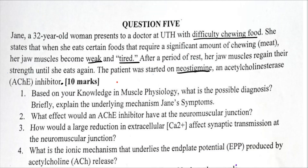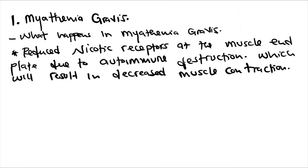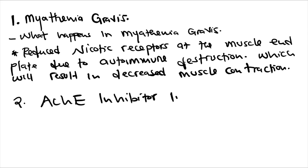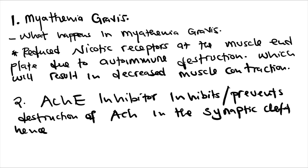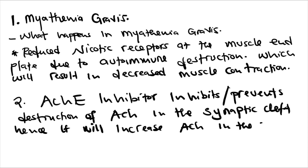Number two: what effect would an acetylcholinesterase inhibitor have at the neuromuscular junction? An acetylcholinesterase inhibitor inhibits or prevents the destruction of acetylcholine in the synaptic cleft. Hence, it will increase acetylcholine in the synaptic cleft, causing increased muscle contraction.